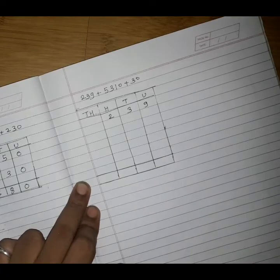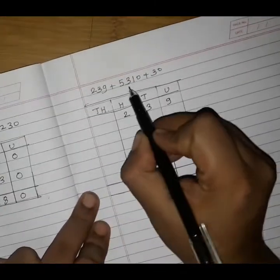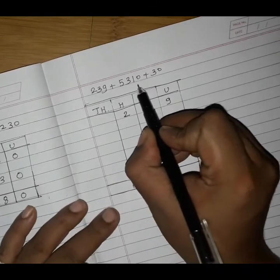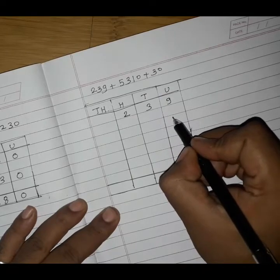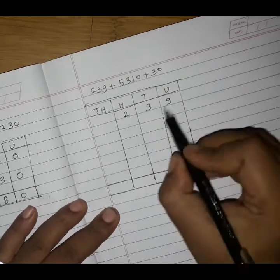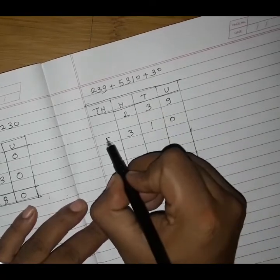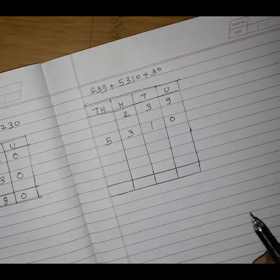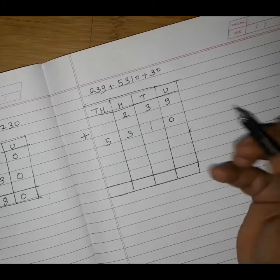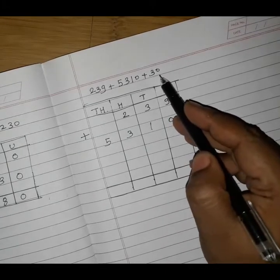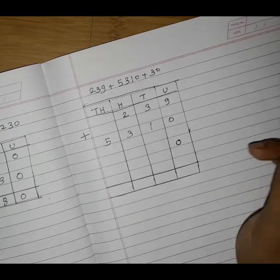The next number is 5310. We will write 0 at units, 1 at tens, 3 at hundreds, and 5 at thousands. Don't forget the plus sign. The third number is 30, so we will write 0 at units place and 3 at tens place.